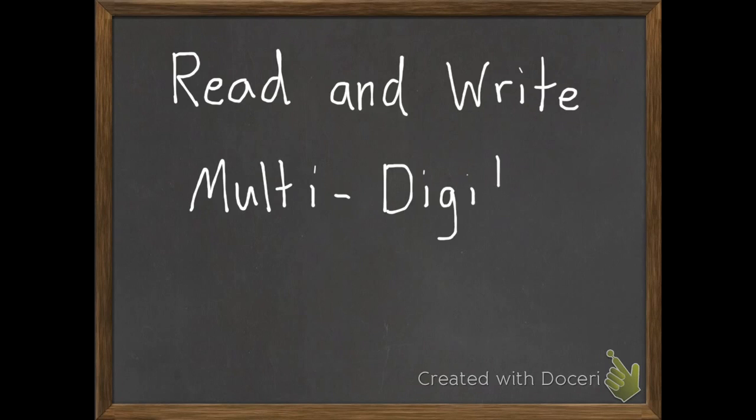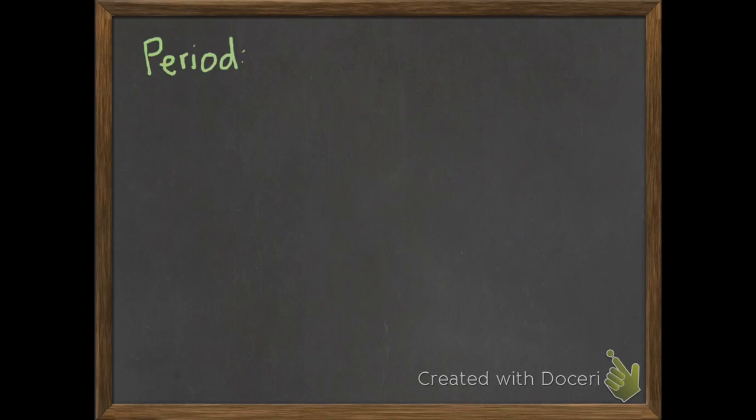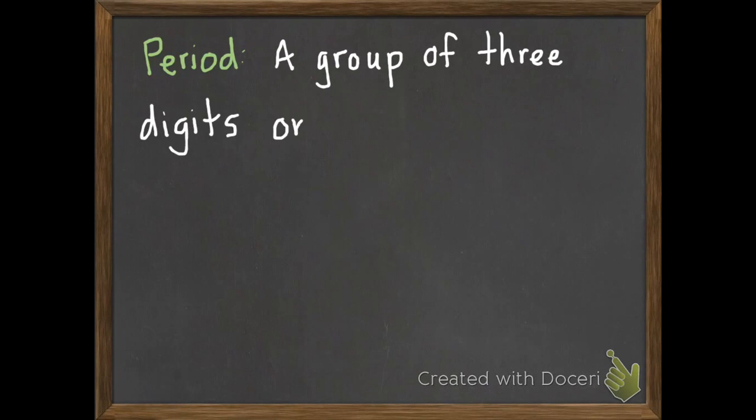Today, we will read and write multi-digit numbers. Our first vocabulary word is period. In math, a period is a group of three digits on a place value chart.